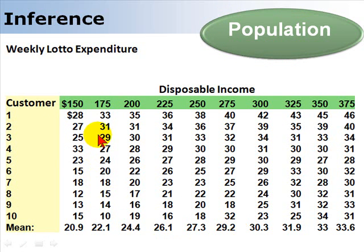And what it is, is it's four levels of disposable income. So here's $150 per week in disposable income. There are 10 customers at our store who spend these amounts on the lotto. So here's somebody with $150 in disposable income who spends $28 per week. And here's someone who spends $27 per week. And then we can go up to $175 per week in disposable income. And then we have a different set of customers.